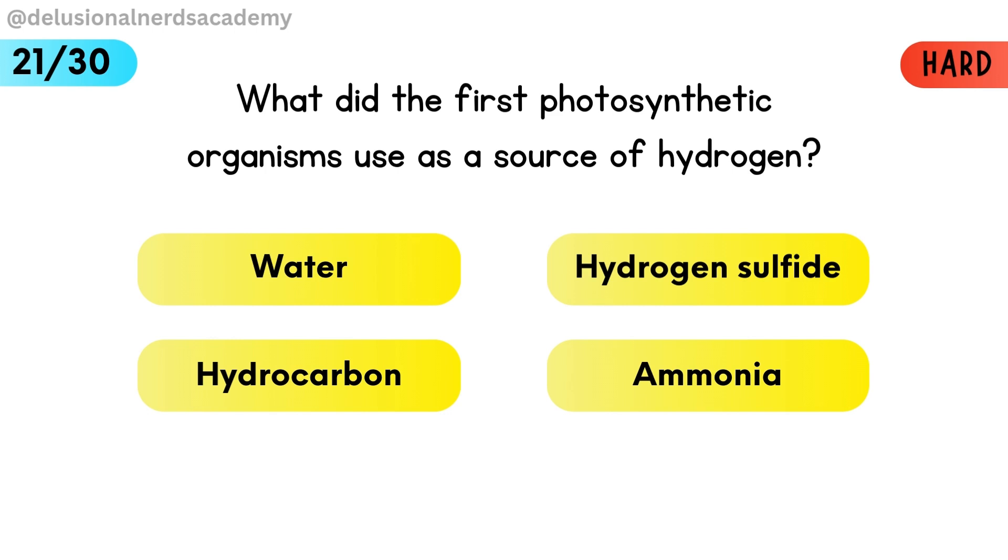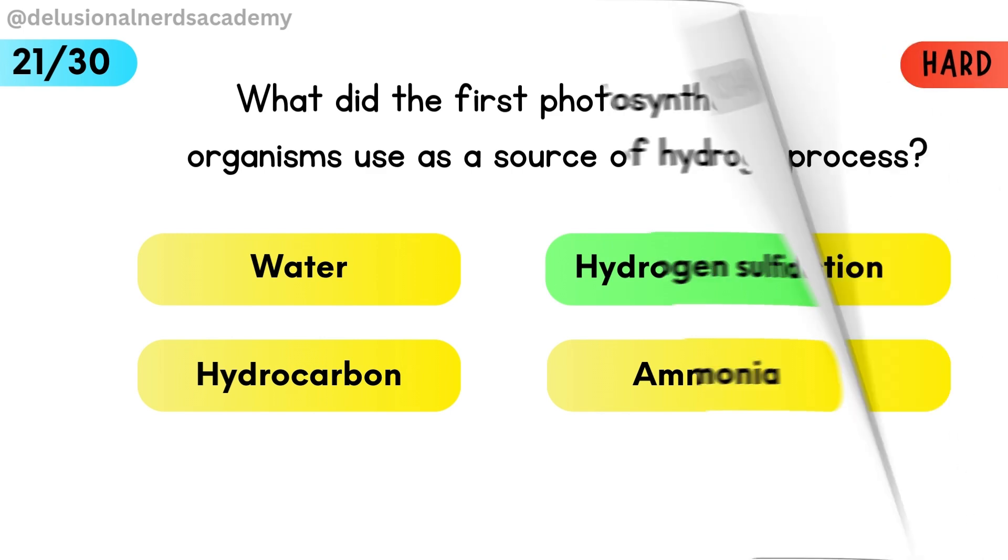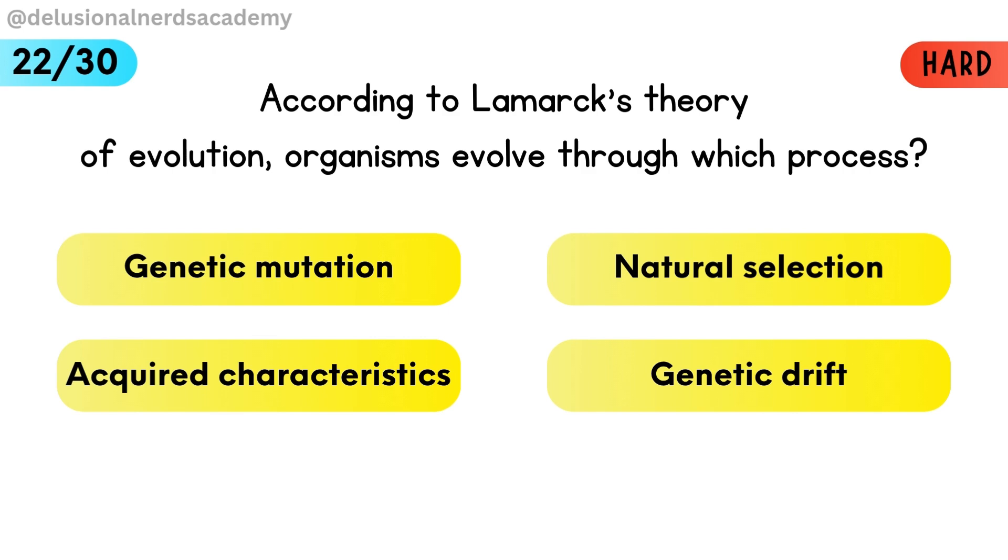What did the first photosynthetic organisms use as a source of hydrogen? The first photosynthetic organisms used hydrogen sulfide. According to Lamarck's theory of evolution, organisms evolve through which process? Lamarck believed organisms evolved through acquired characteristics.